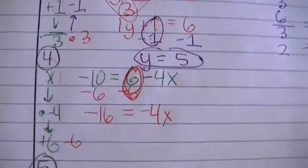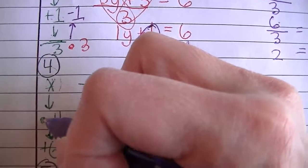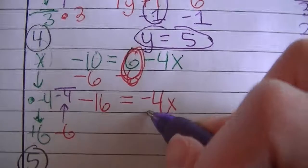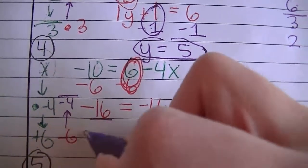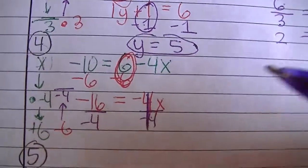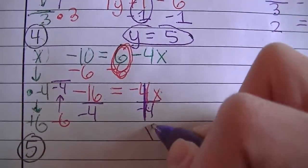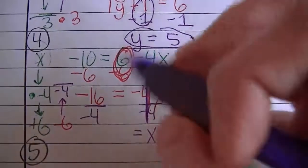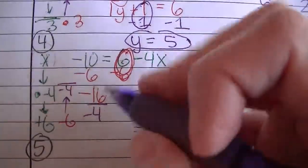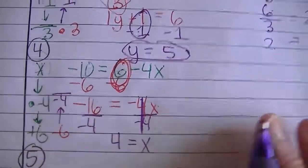6 subtract 6 is 0. Negative 10 subtract 6 is negative 16. Bring everything down — please bring down that negative 4x. Don't just bring down the 4x; look at the symbol in front of it. That's a common mistake that many people seem to do. Back on up: inverse operation of multiplied by negative 4 is to divide by negative 4. So divide both sides by negative 4. Negative 4 divided by negative 4 is 1 — any number divided by itself is 1. 1 times x is x. Negative divided by negative is a positive, so negative 16 divided by negative 4 is a positive 4. So 4 equals x, or x equals 4 — same thing.